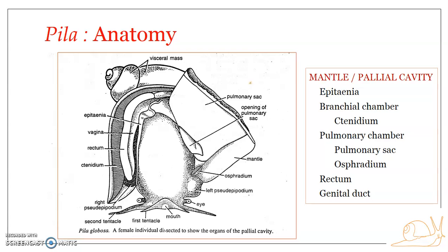The mantle cavity refers to the part of the mantle that envelops the anterior part of the body — it encloses a larger space, and this space is referred to as the mantle cavity or palleal cavity. The mantle cavity has two portions: the branchial chamber and the pulmonary chamber. The branchial chamber is the smaller portion, the right part of the mantle cavity.